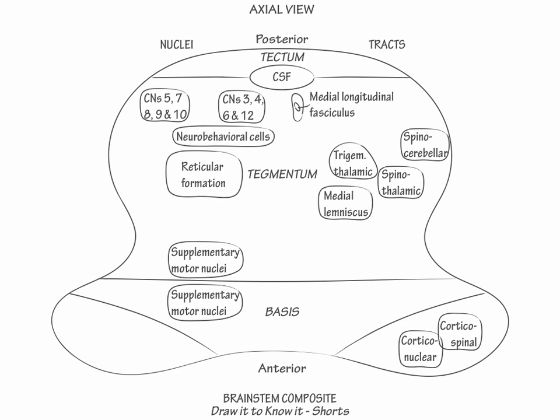Lastly, label the cerebellar peduncles. The superior, middle, and inferior cerebellar peduncles all attach to the pons. The superior peduncle also attaches to the midbrain, and the inferior peduncle also attaches to the medulla. This concludes our diagram.